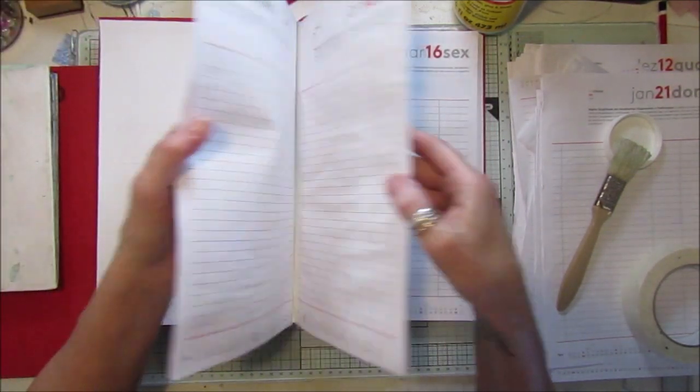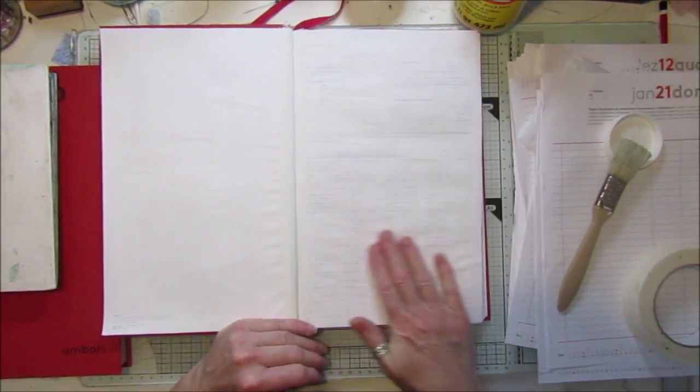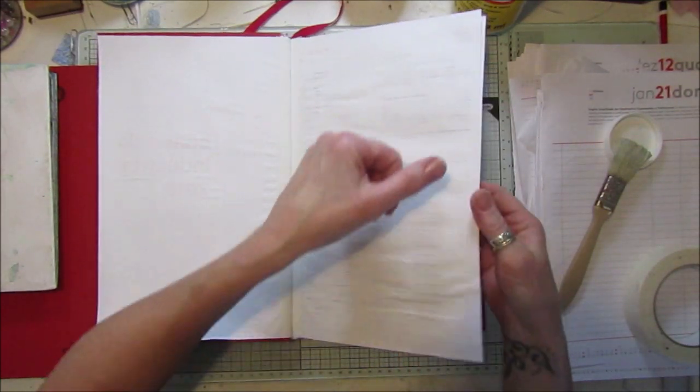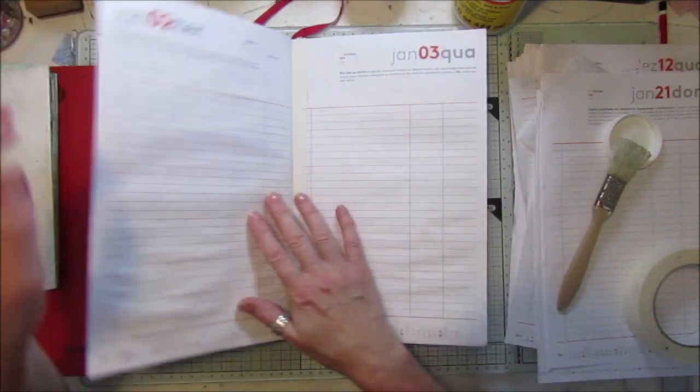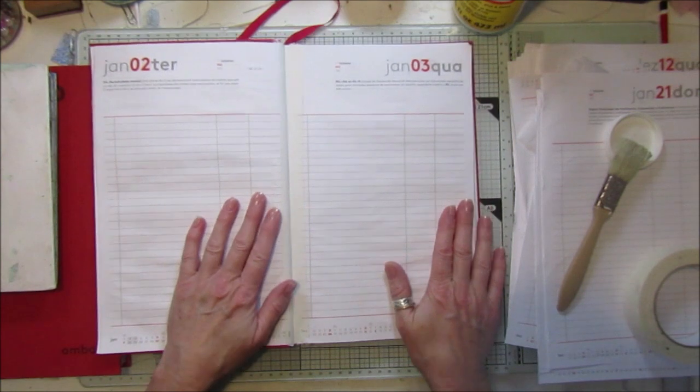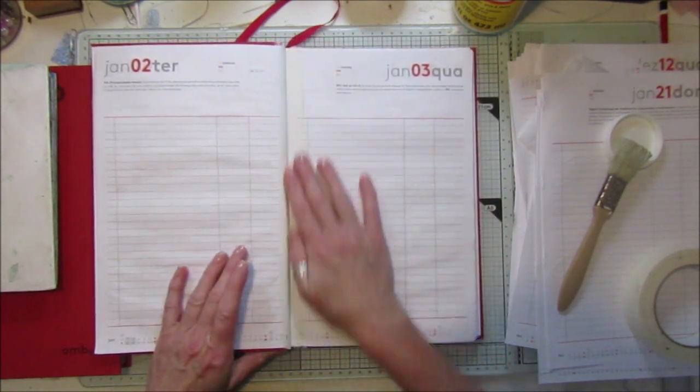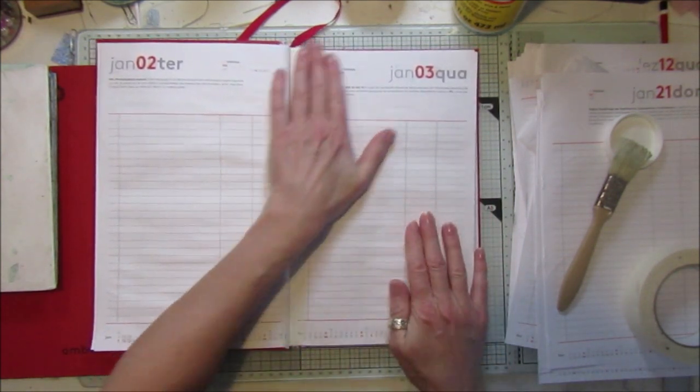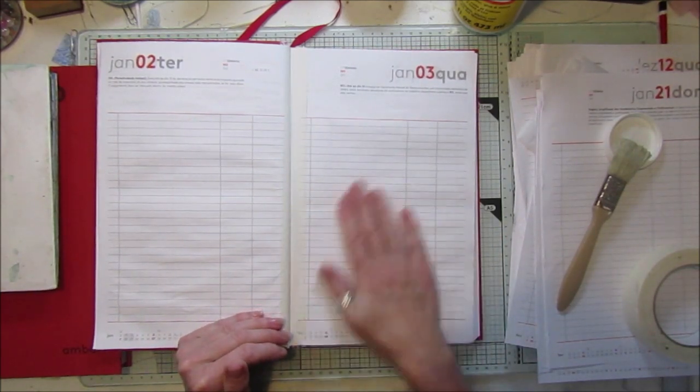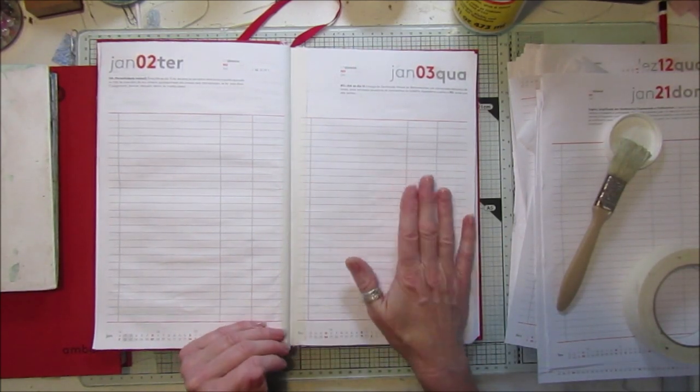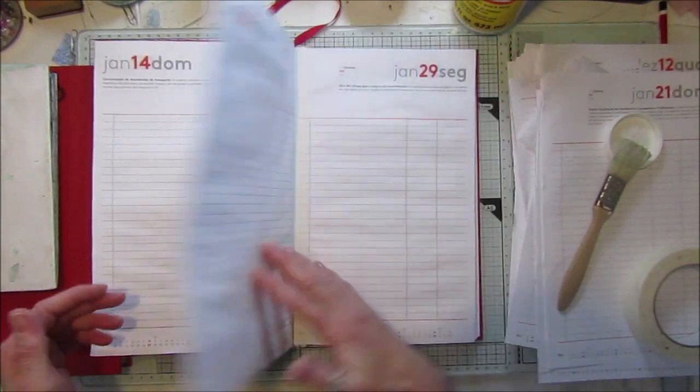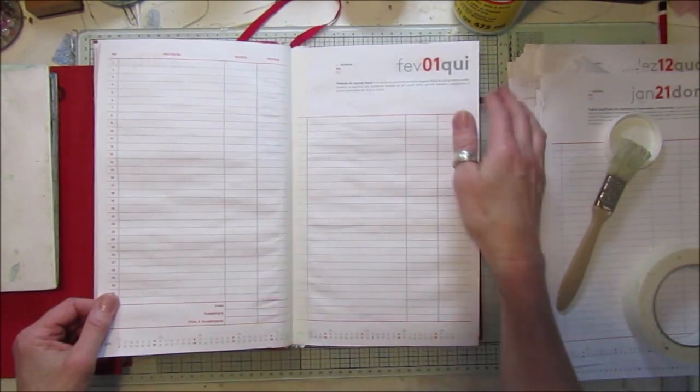So there we go. Again, that one I did gesso over because it had writing all over it, but I'm not going to gesso over any of the other ones because if I'm going to collage on it, then it's a waste of gesso. But I will do it depending on what theme I'm going to use. If I'm going to paint the background or ink it, then I'll gesso over it. But if I'm just going to collage it, there's no point.